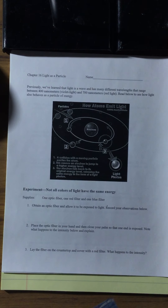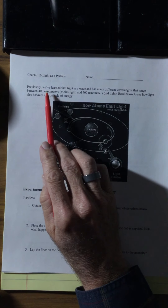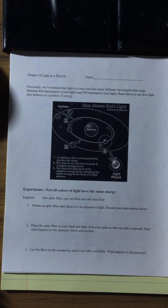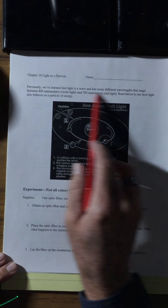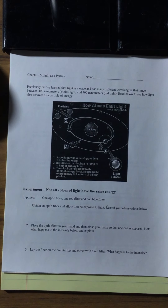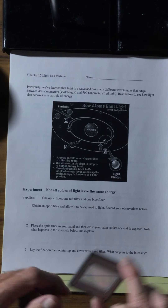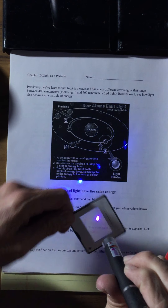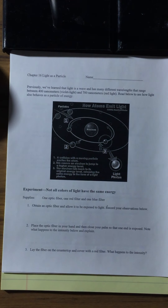We're going to walk through this and go through each of these questions. Previously we learned that light is a wave and has many different wavelengths ranging between 400 nanometers — that's the violet light — and 700 nm, which is the red light. Read below to see how light also behaves as a particle. When we measure the nanometers, this is the wavelength — this is how it acts as a wave. That's light as a wave, and this is as a particle.